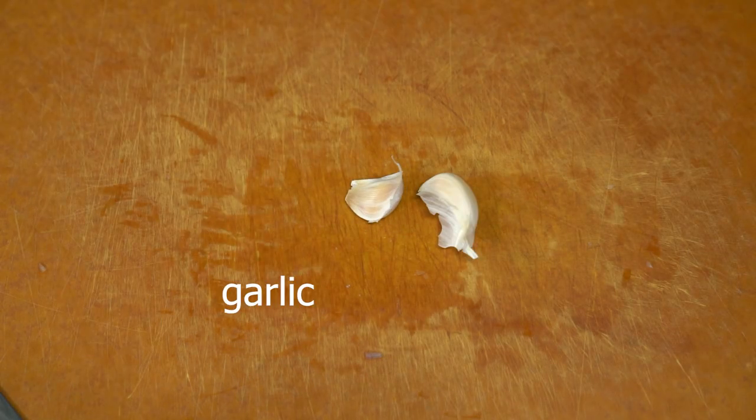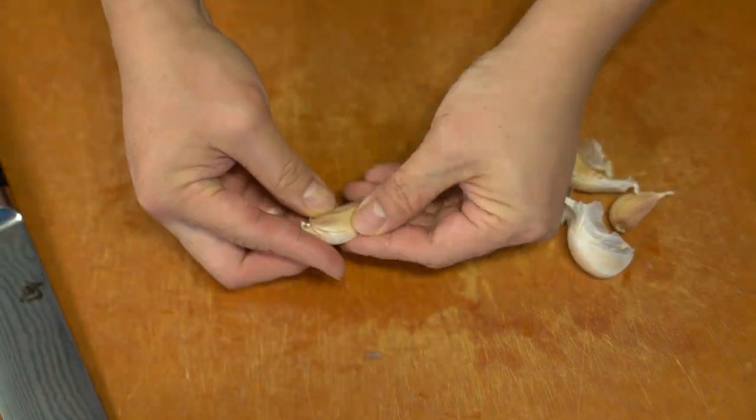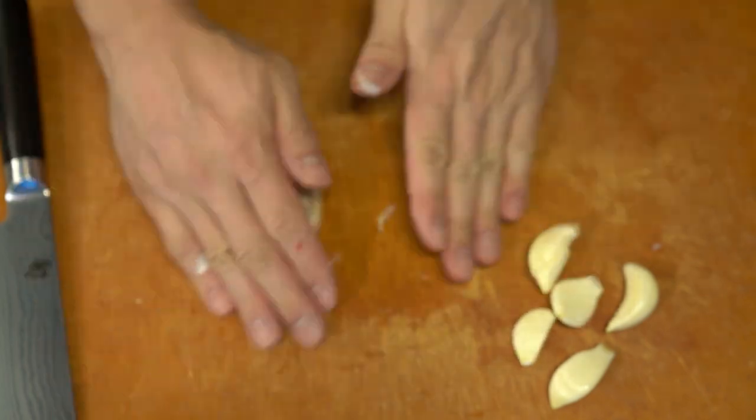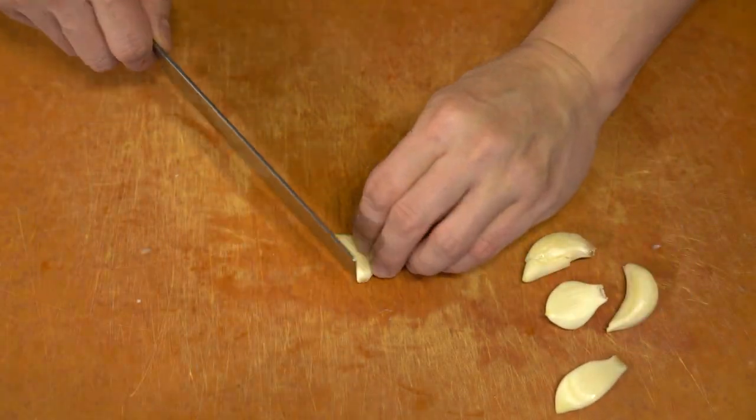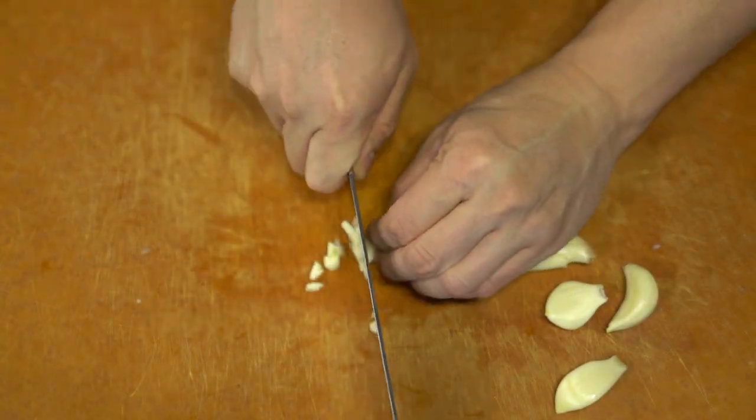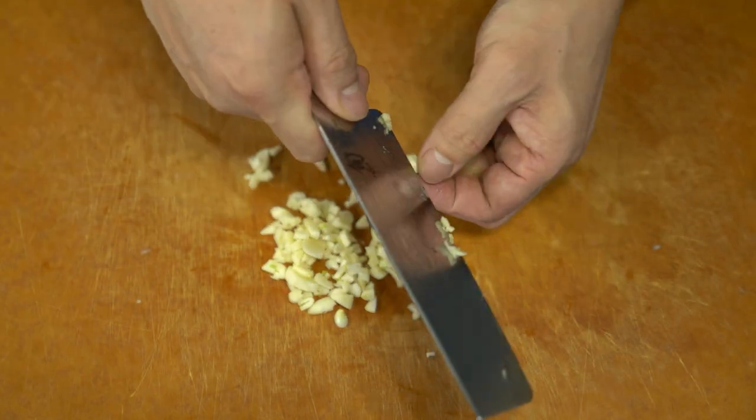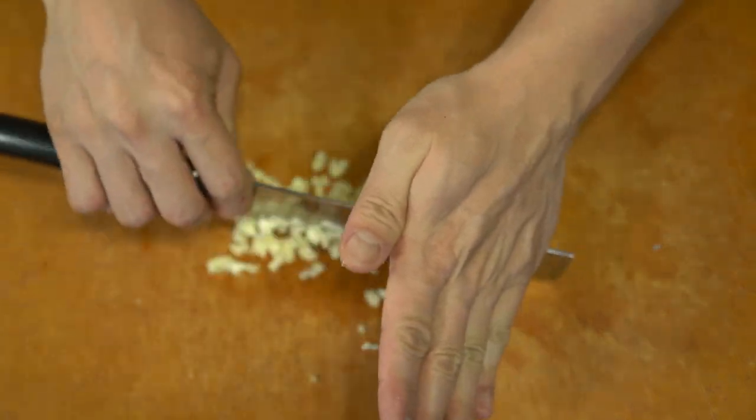Now, this sauce, as I mentioned, is really versatile. You can add it to any meal, whether it be breakfast, lunch, or dinner. You can add it to a noodle dish, you can add it to a rice dish, and you could choose to have it very salty or very spicy by adjusting the amount of chili and the amount of sauce you drizzle onto your dish.